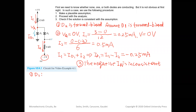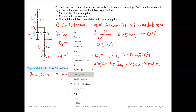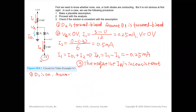D2 is still forward biased. Now we assume D1 is reverse biased.